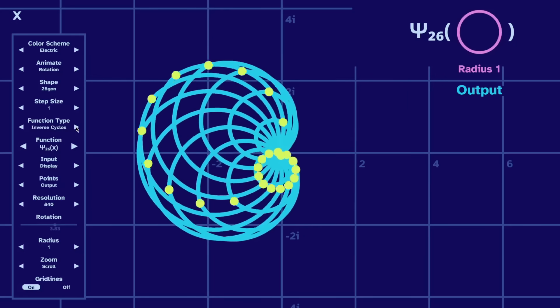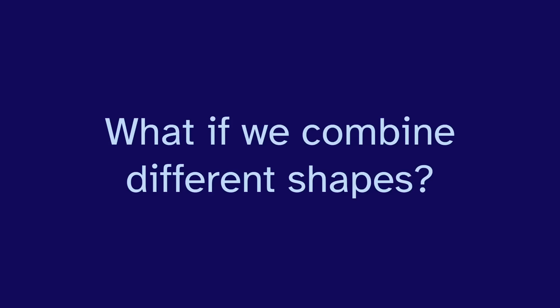And doing this made me wonder, what if we combine different shapes, like a triangle times a circle? This presents a problem. Two different shapes have two different sets of points. Given this point on the triangle, which point of the circle do we multiply with?